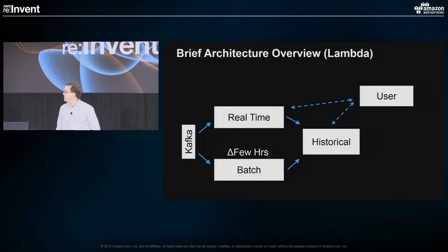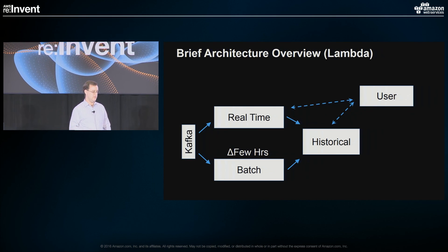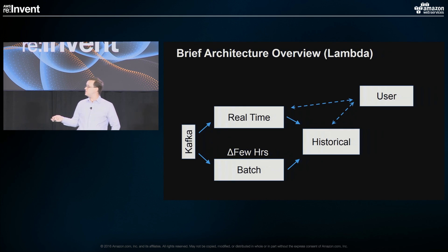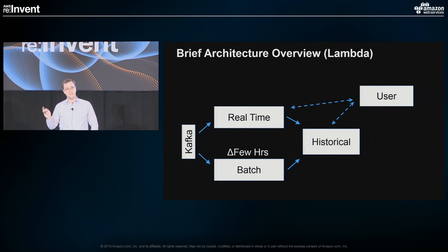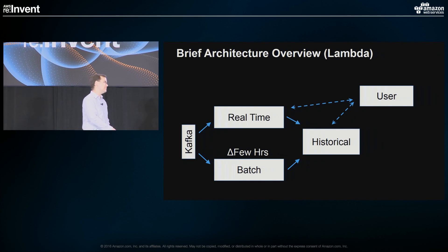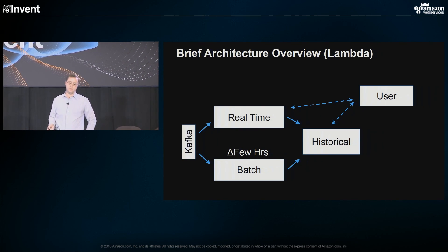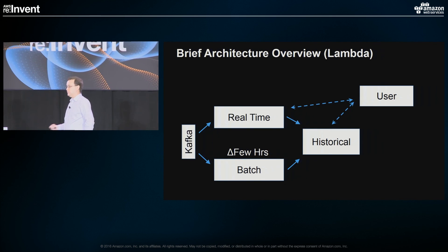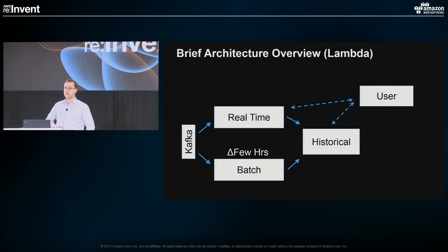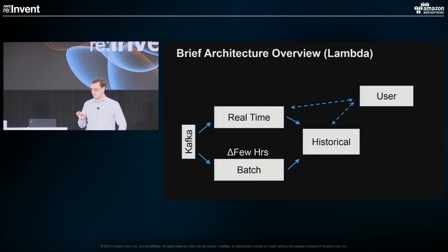Putting it all together: the top part comprises our real-time pipeline going from Kafka to real-time Druid and eventually being handed off to historicals. The bottom part, which happens a few hours later, is our batch processing going from Kafka through Spark and then loaded into the historicals. One of the cool things about Druid is that when you issue queries, it can hit both the real-time and historical components at the exact same time, so you get data as soon as it's available. Note: this architecture style is called the lambda architecture — that's actually the name of the style, separate from AWS Lambda.